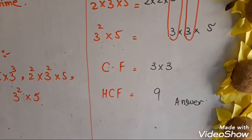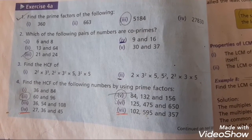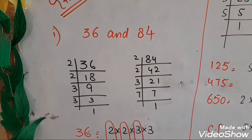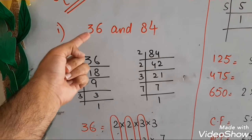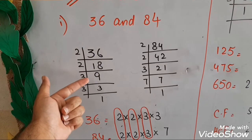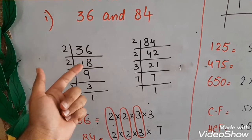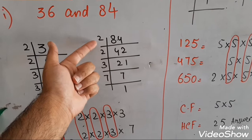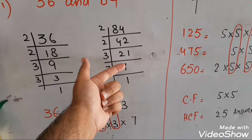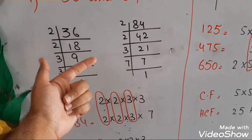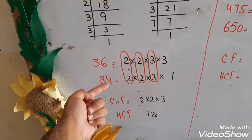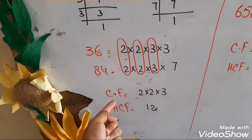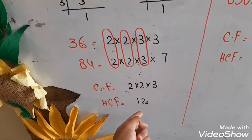Question number 4 of exercise 4.8: find the HCF of the following numbers by using prime factors. The first part is 36 and 84. पहले 36 के prime factors find करेंगे: 2 ones are 2, 1 carry; 2 eights are 16; 2 nines are 18; 3 threes are 9 and 3 ones are 3 — these are the prime factors of 36. For 84: 2 fours are 8; 2 twos are 4; 2 ones are 2; 3 sevens are 21 — these are the factors of 84. Now underline the common factors: 2, 2 and 3. Common factors are 2×2×3 = 4×3 = 12. So 12 is the HCF.